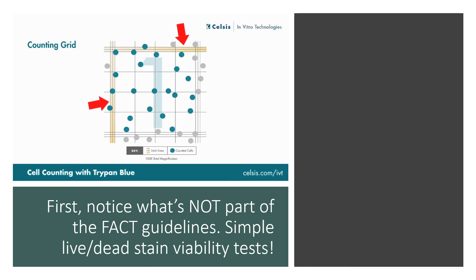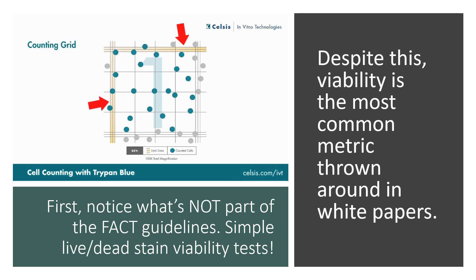Notice what's not part of the FACT guidelines: simple live-dead stain viability tests. Despite this, viability is the most common metric thrown around in these white papers, but it's not even part of these guidelines.